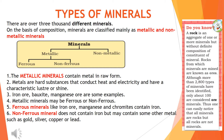Ferrous minerals like iron ore, manganese, and chromides contain iron and are called ferrous minerals. Non-ferrous minerals do not contain iron but may contain some other metal such as gold, silver, copper, or lead.